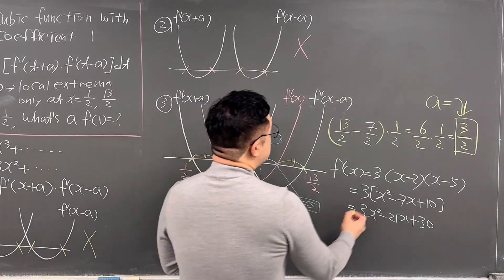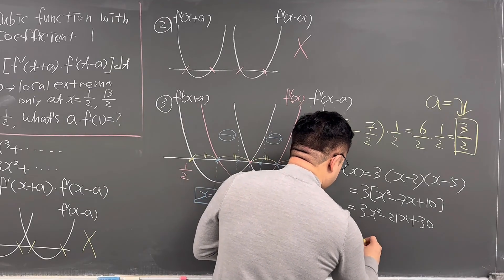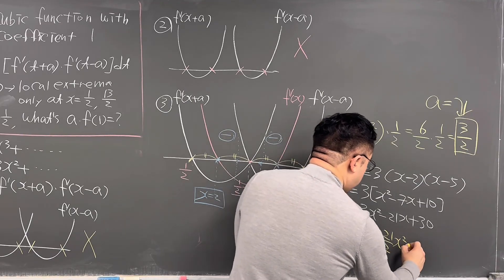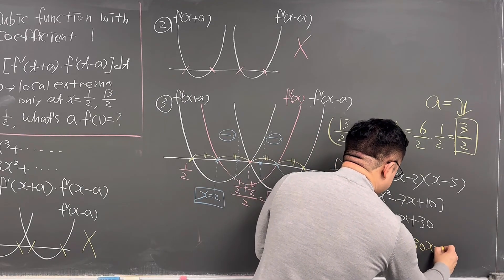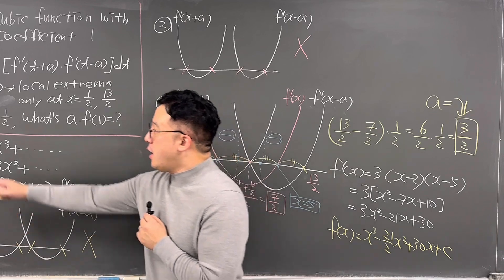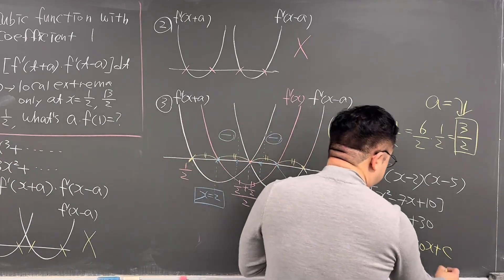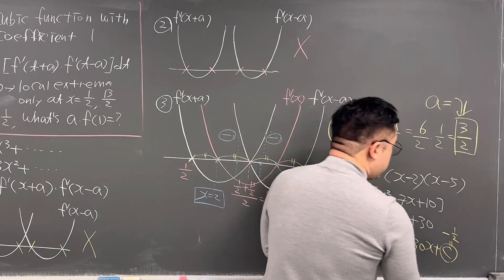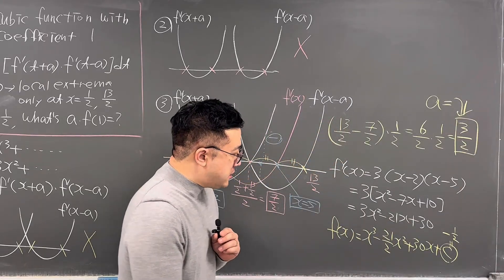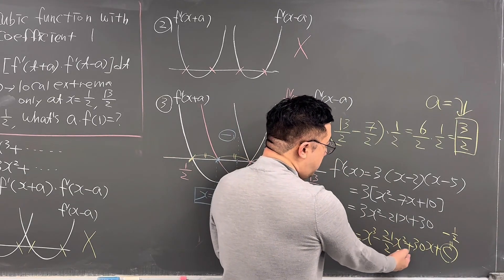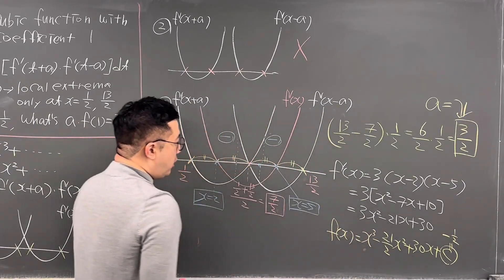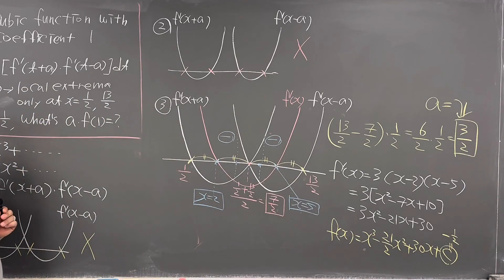Integrating f'(x), we get f(x) = x³ - (21/2)x² + 30x + c. The value of c is determined by the condition f(0) = -1/2 given in the question, so c = -1/2. Therefore f(x) = x³ - (21/2)x² + 30x - 1/2. We already have a = 3/2, so now we just need to plug x = 1 into f(x) and multiply by a.